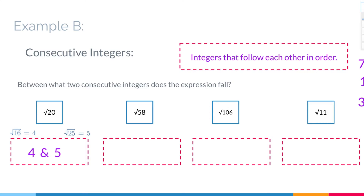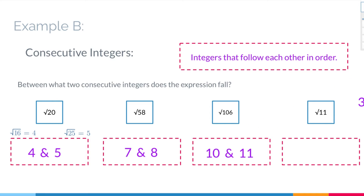The square root of 58 is between the square root of 49 and the square root of 64, so between 7 and 8. The square root of 106 is between 100 and 121, so between 10 and 11. The square root of 11 is between 3 and 4, falling between the square root of 9 and the square root of 16. Those are your consecutive integers.